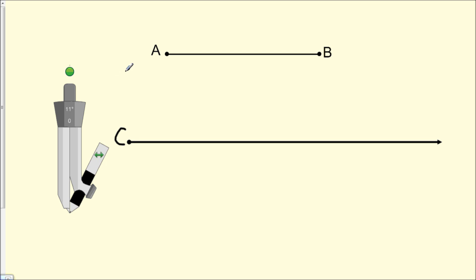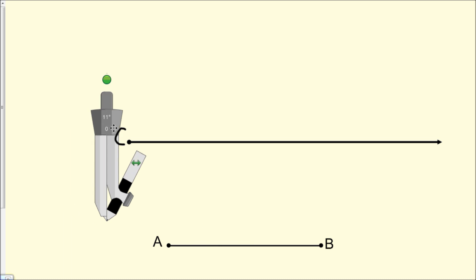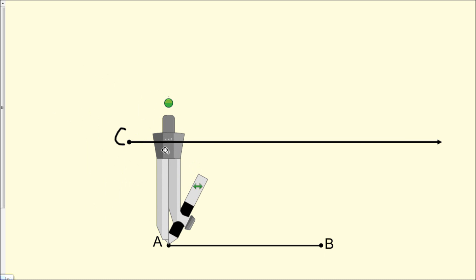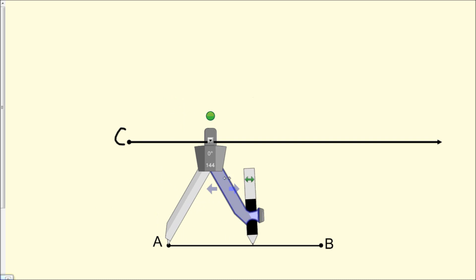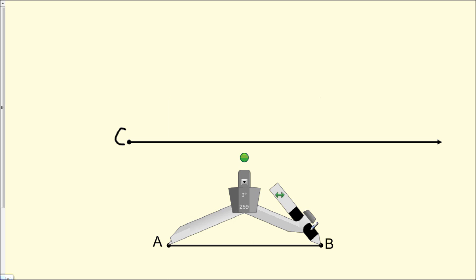So now what we want to do next is we're going to set our compass on the end point A, and we're going to extend the length of the compass so that the pencil end reaches point B.